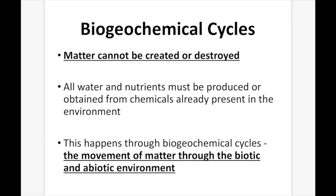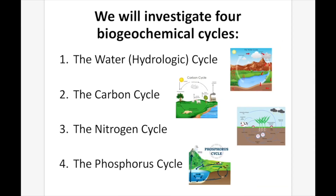The hydrogens and oxygens that were present in water 65 million years ago are the same hydrogens and oxygens present today. They may not be in the same form — they may not be in the form of water — but they are still around. The hydrogens weren't created; they just moved from one thing to another. So we're going to investigate four biogeochemical cycles: the water cycle, the carbon cycle, the nitrogen cycle, and the phosphorus cycle.